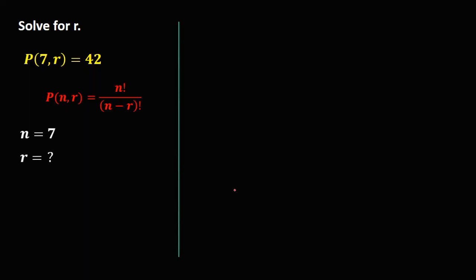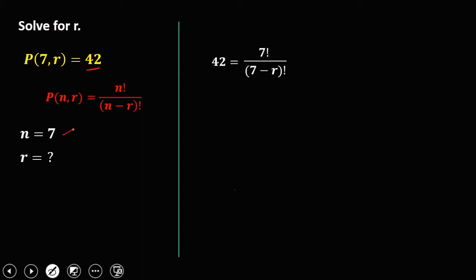To solve for R, since the given is equal to 42, we write: 42 is equal to 7 factorial over (7 minus R) factorial. Then to simplify, do cross multiplication: 42 times (7 minus R) factorial equals 7 factorial. Then divide both sides by 42.